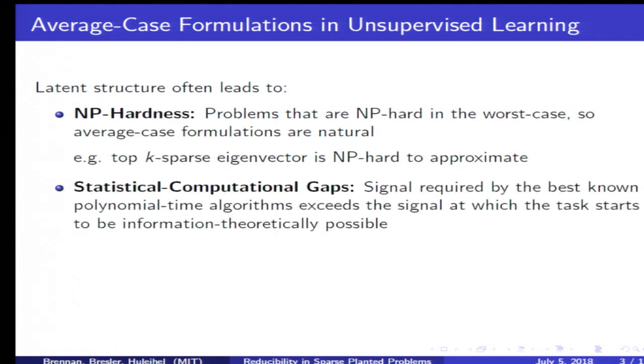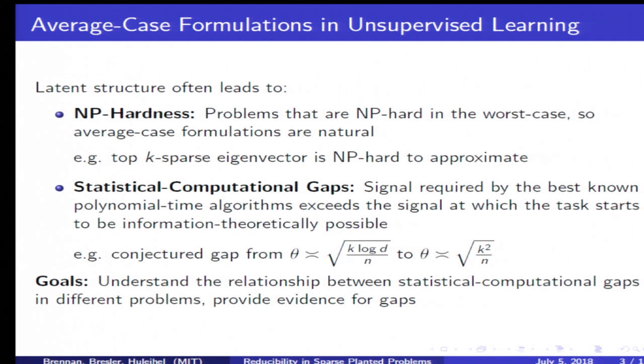However, if you take on an average case formulation, this often leads to statistical computational gaps, which are cases in which the minimal SNR necessary to solve the task is much lower than the minimal SNR required by the best known polynomial time algorithms. In the example I gave, a 2013 paper by Berthet and Rigollet gives evidence for a k to k squared gap in the minimal theta necessary to solve the problem. The goal in our paper is to understand the relationship between the statistical computational gaps across several different problems, and also to provide evidence for the gaps and give tight lower bounds.